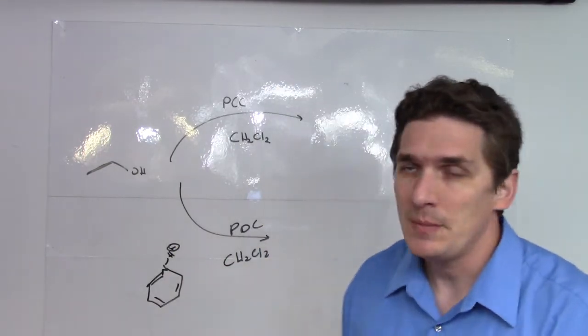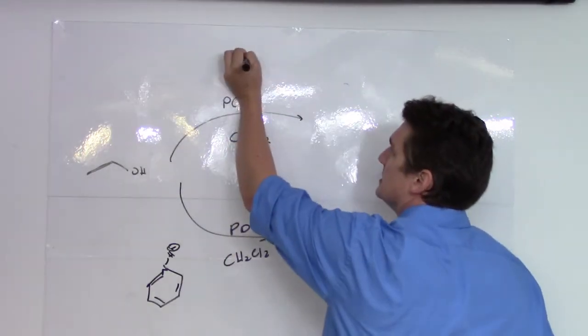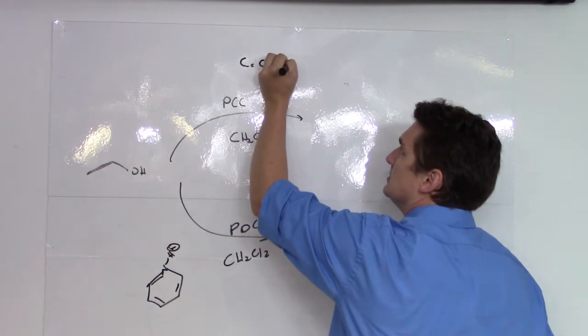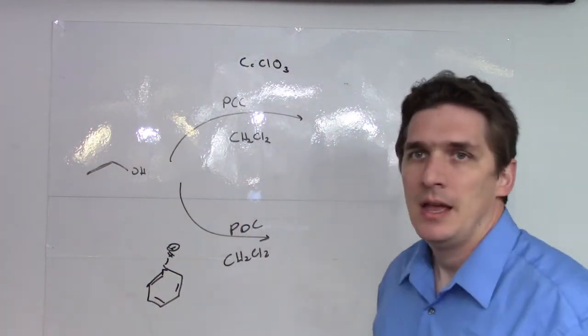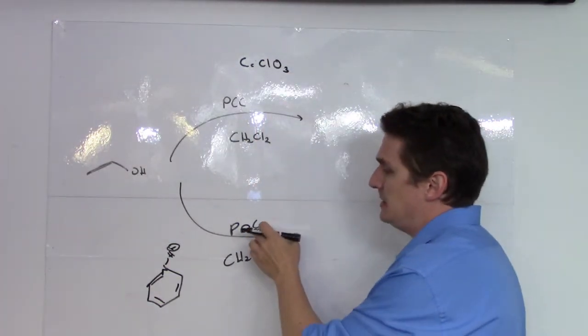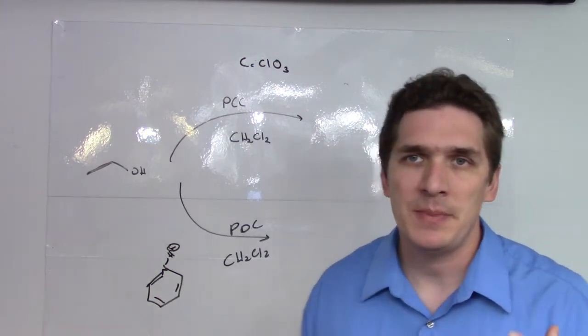In the case of the chromic acid, the CrO4, we've actually got CrClO3. And in terms of the PDC, we've still got the dichromate, but they're both bound to pyridinium.